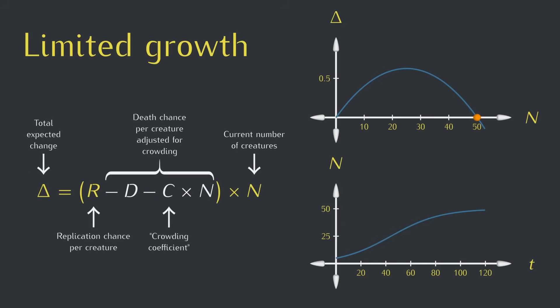To give you some of the usual terminology, this equilibrium number is called the carrying capacity, because it's the largest number of creatures that the environment can sustainably support. And this number over time curve is called a logistic growth curve, as opposed to an exponential growth curve.